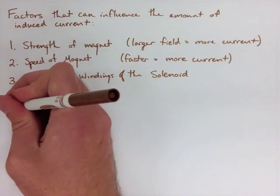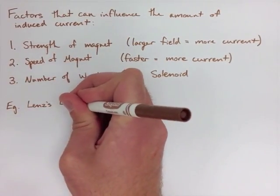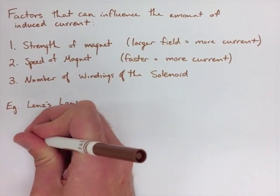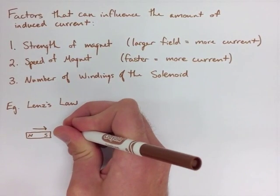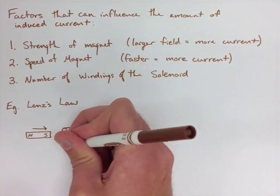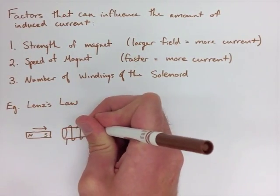Looking at a couple of types of questions that you could see with Lenz's Law. First being that if I gave you a magnet, told you the two poles of the magnet and where it was moving, what would be the current that we have, and where would the poles be that it's making?